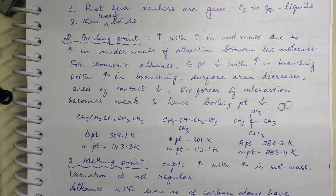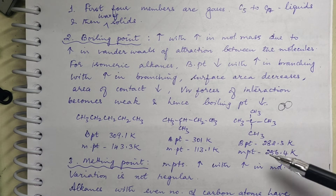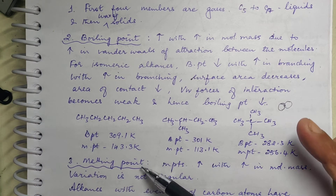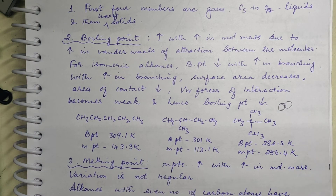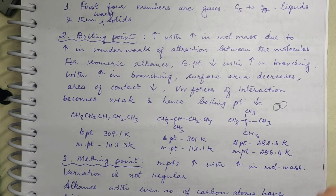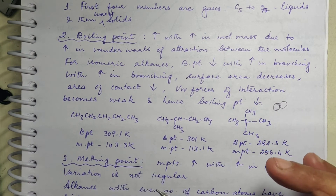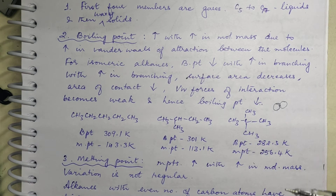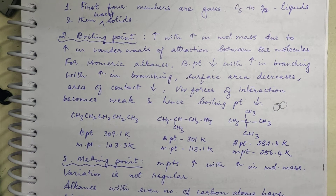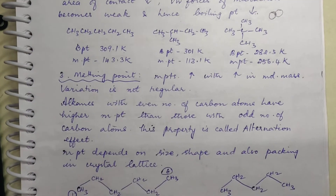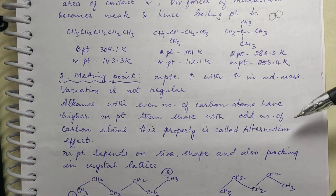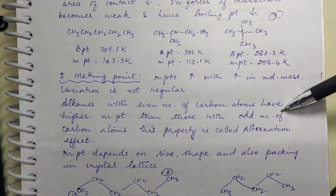Melting point increases with increase in molecular mass. However, the variation is not regular. Melting point is a valid property only for solid alkanes. Alkanes with an even number of carbon atoms have higher melting points than those with an odd number of carbon atoms.